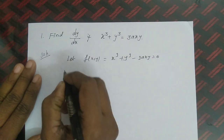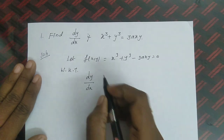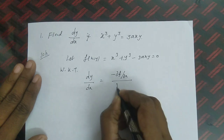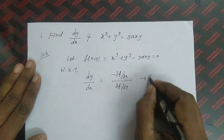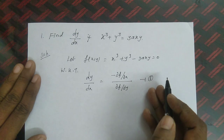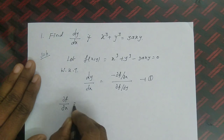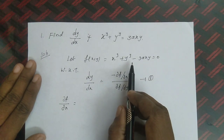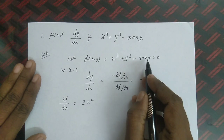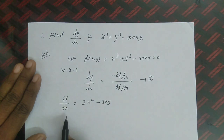We know dy/dx = -(∂f/∂x) / (∂f/∂y) — call this equation 1. From f(x, y) we find ∂f/∂x and ∂f/∂y and substitute back. For ∂f/∂x, treating y as constant: differentiation of x³ is 3x², y³ gives 0, and -3ay (constant) times derivative of x gives -3ay. So ∂f/∂x = 3x² - 3ay.